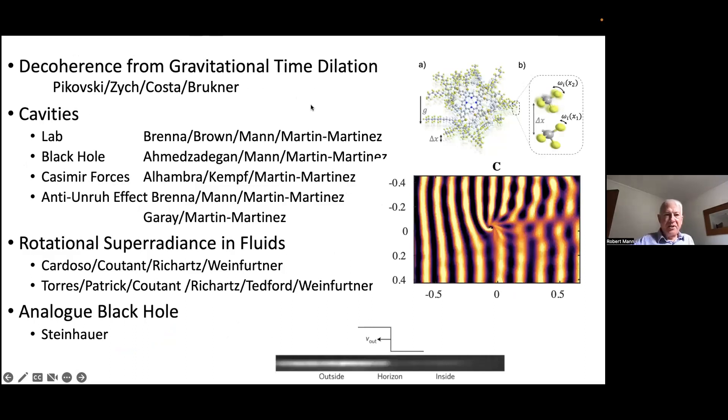There are other ideas that have been explored: decoherence from gravitational time dilation, much work on cavity physics by various people, some of which I was involved with. Meanwhile, in the lab, rotational superradiance was observed in fluid dynamics by groups led by Silke Weinfurtner. Here's a picture of how ripples come in at the right, and when they pass a vortex have this pattern, and you can show this pattern correlates with expected superradiance. Jeff Steinhauer formed an analog black hole out of a Bose-Einstein condensate with an outside horizon and an inside based on the speed in the fluid.